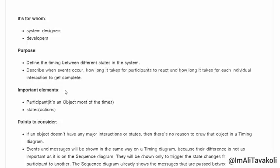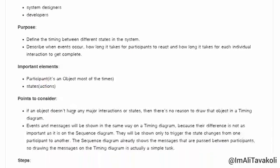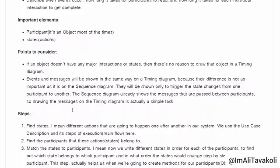The important elements are: Participants — it's an object most of the time, just like in Sequence and Communication Diagrams — and States, which we can also call Actions. A key point to consider: if an object doesn't have any major interactions or states, there's no reason to draw it in a Timing Diagram, just like how we only draw participants that are actually taking part in the process. Events and messages will be shown in the same way, because their difference is not as important as it is in a Sequence Diagram.